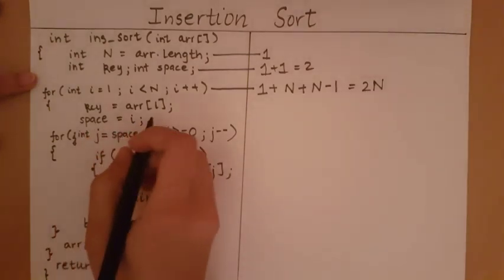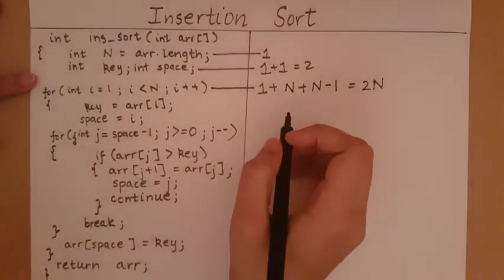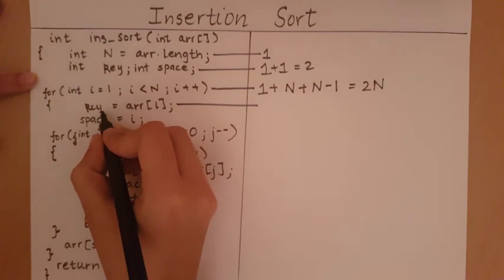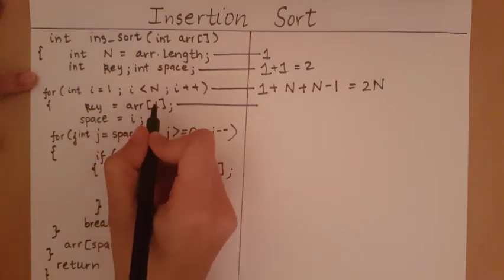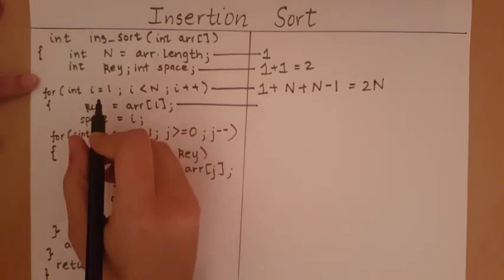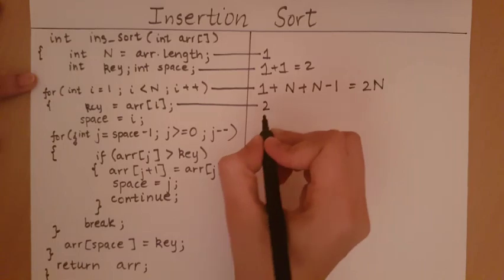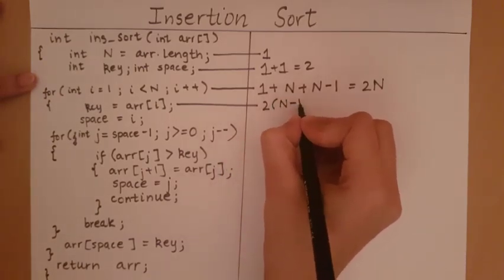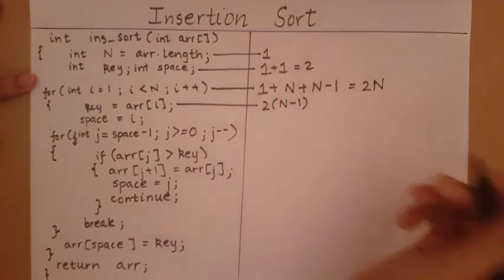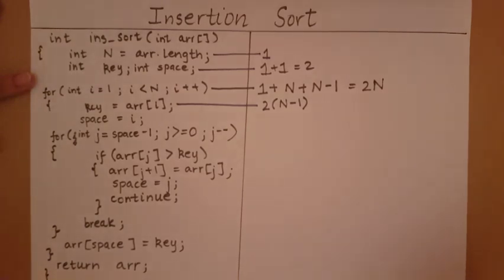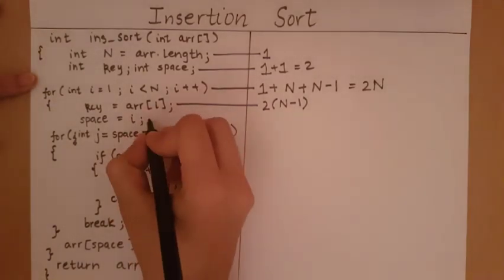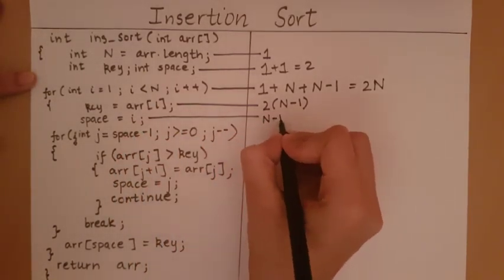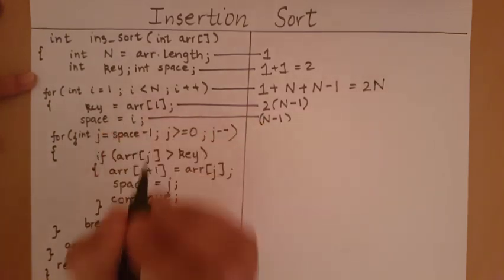The statement inside the outer loop that stores the current element — involving an array indexing and an assignment — takes 2 primitive operations on its own, but it happens n-1 times. Similarly, the statement 'space = i' will happen n-1 times because it is within the loop.